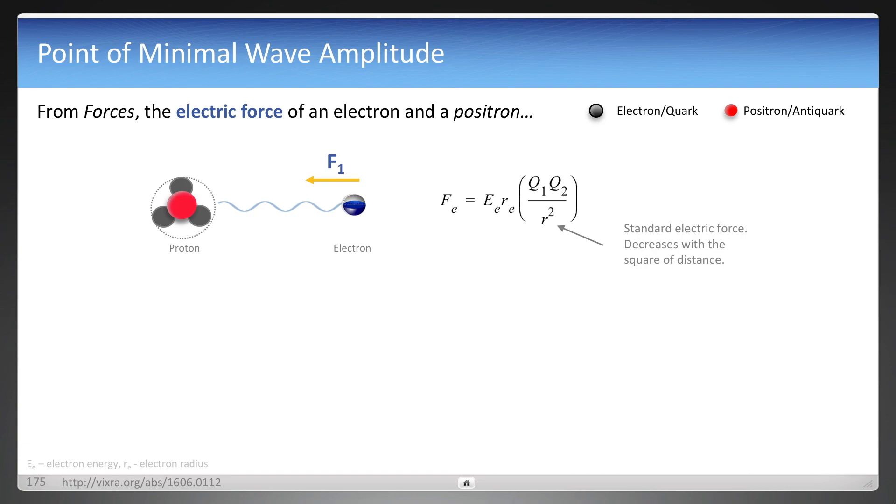Now, from the forces paper, the electric force, an electron, and a positron is as follows. This electric force equation, same one from the forces, but just been reformatted now to group all the variables into the parentheses. You can see it decreases with the square of the distance.